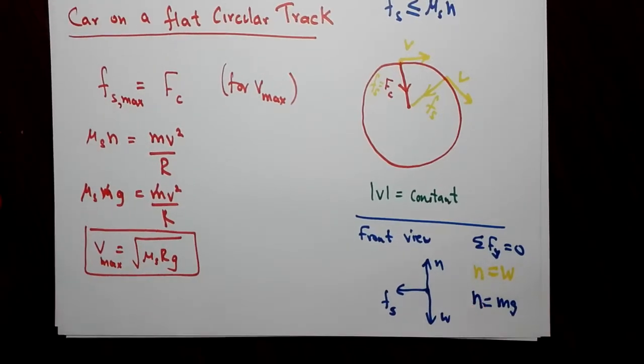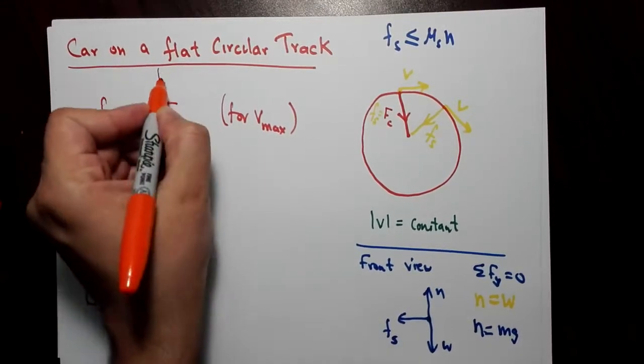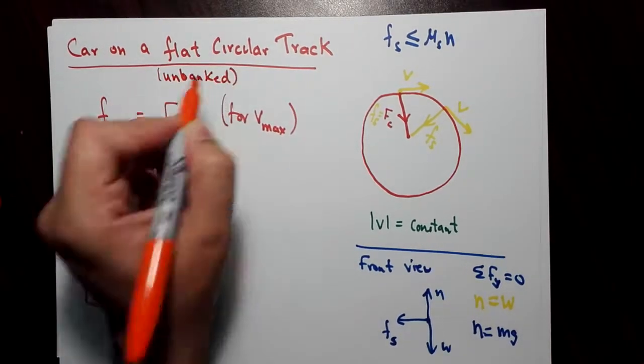So interestingly, the result is independent of the mass of the car. So this was it for the car on a flat circular track. Oh, and just one more thing. This is also called unbanked, something that you'll see in books.